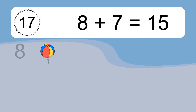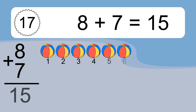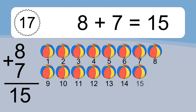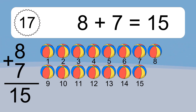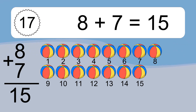Eight plus seven equals fifteen. Let's count it: one, two, three, four, five, six, seven, eight, nine, ten, eleven, twelve, thirteen, fourteen, fifteen.